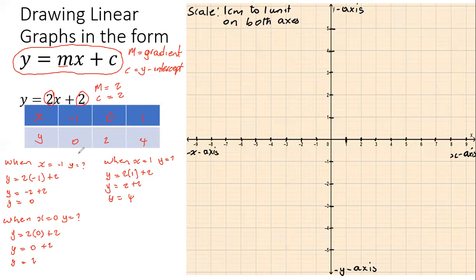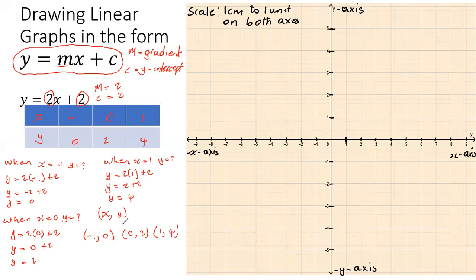From the table, we write these points in the form (x, y) — we normally call these ordered pairs. The first ordered pair is (−1, 0), the second is (0, 2), and the third is (1, 4). These are three points on the line y = 2x + 2.